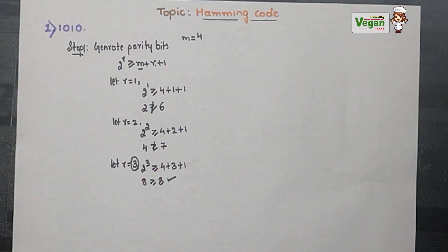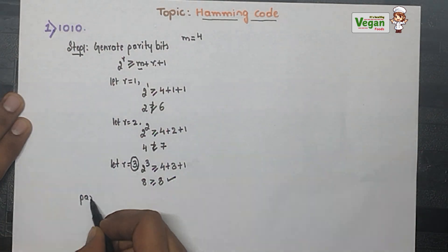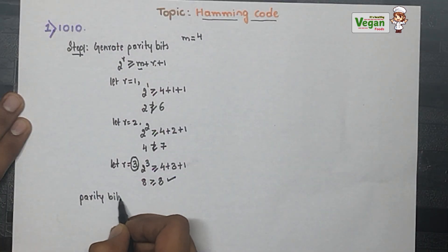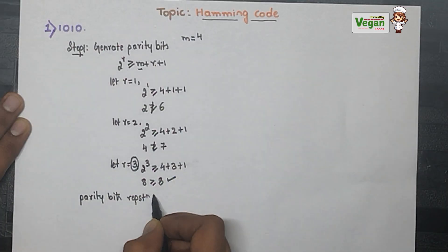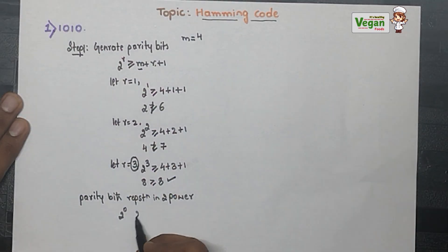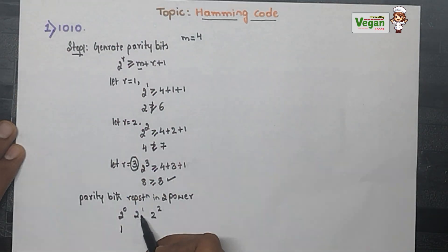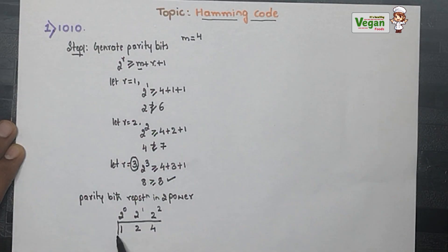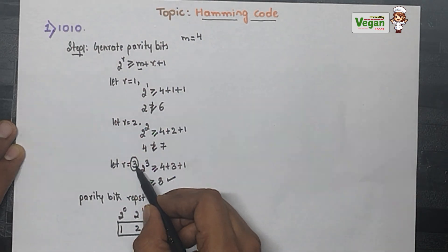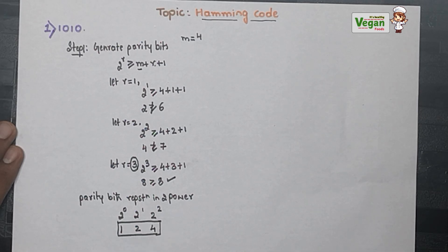With r = 3, the parity bits are represented at positions that are powers of 2: 2^0 = 1, 2^1 = 2, and 2^2 = 4. Since r = 3, we use three powers (0, 1, 2), giving parity bit positions 1, 2, and 4.